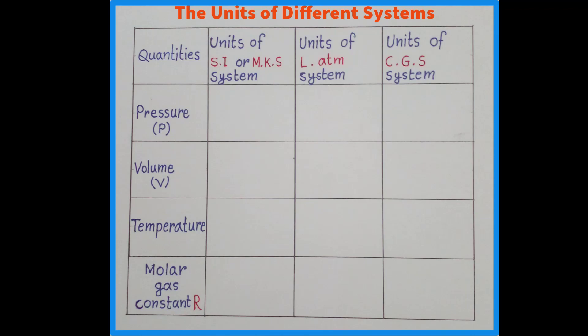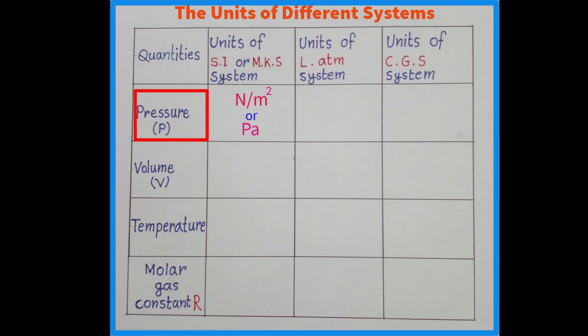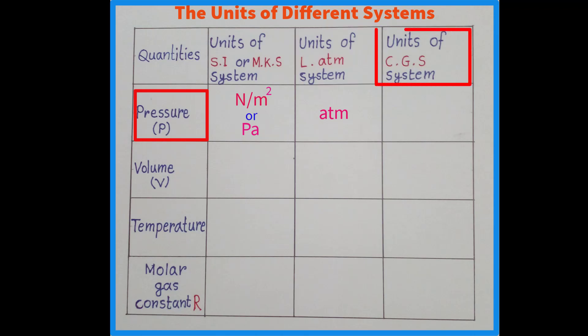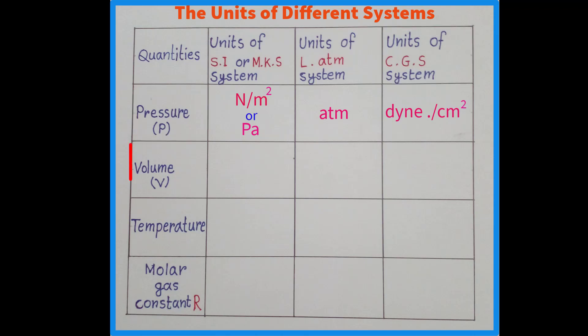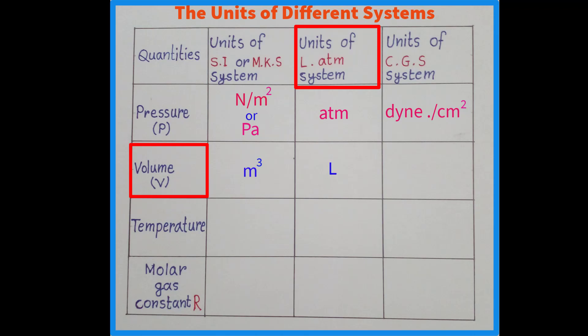The unit of pressure in the SI system is Newton per meter square or Pascal. The unit of pressure in the liter-ATM system is ATM, and in the CGS system it is dyne per centimeter square. The unit of volume in the SI system is meter cube, in the liter-ATM system it is liter, and in the CGS system it is centimeter cube.